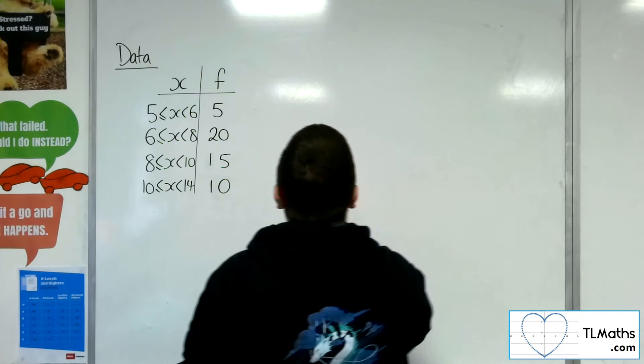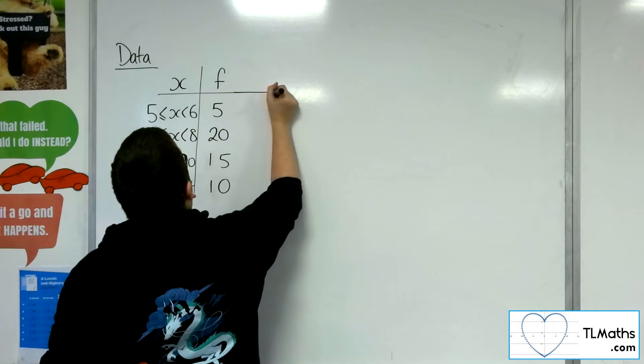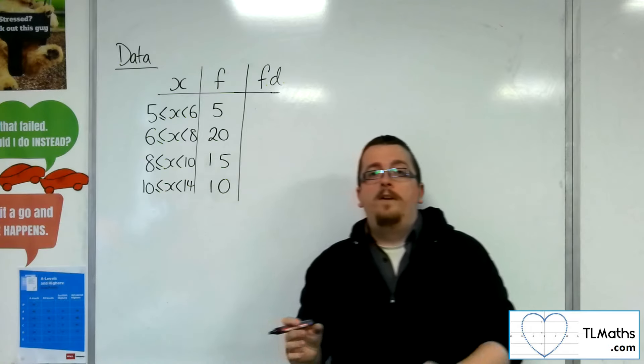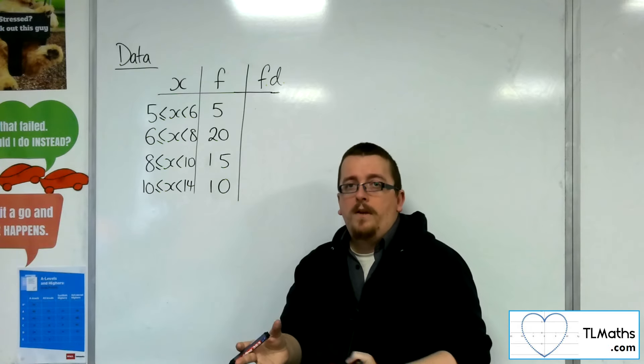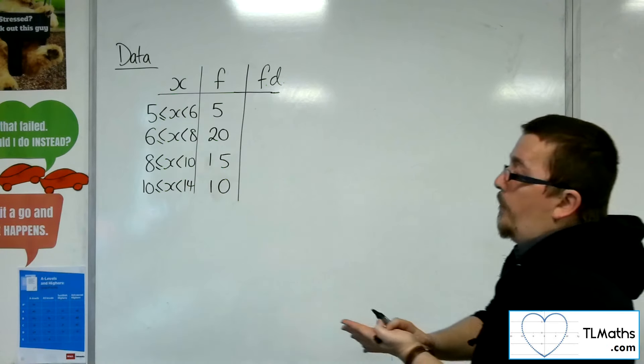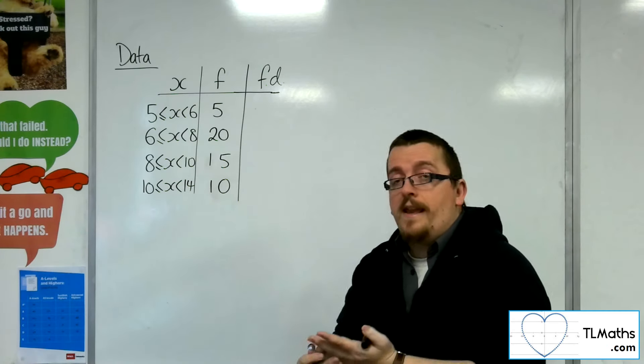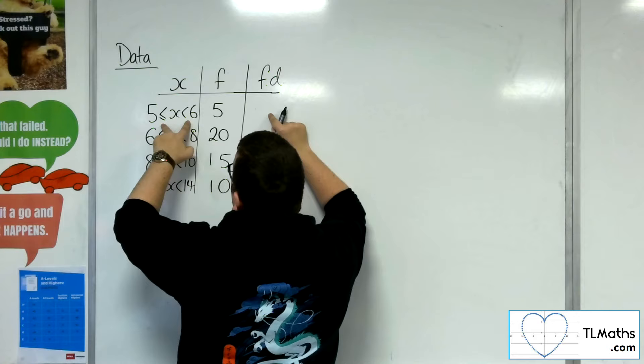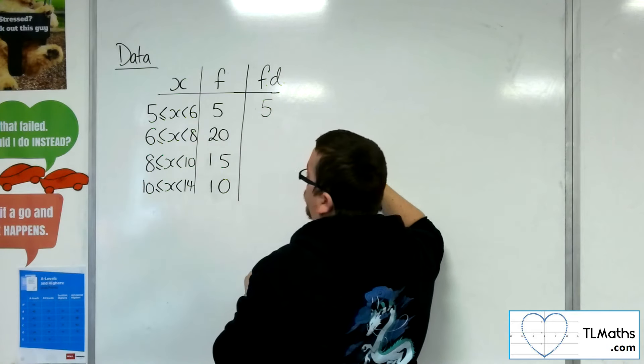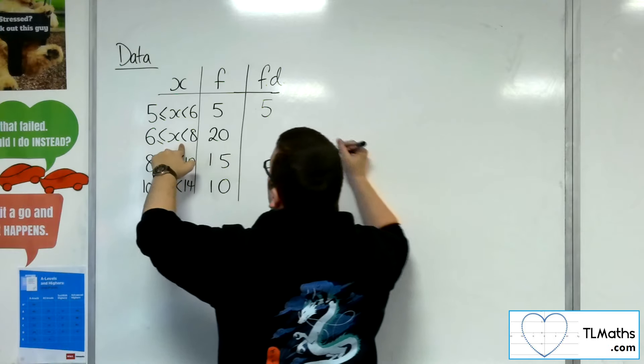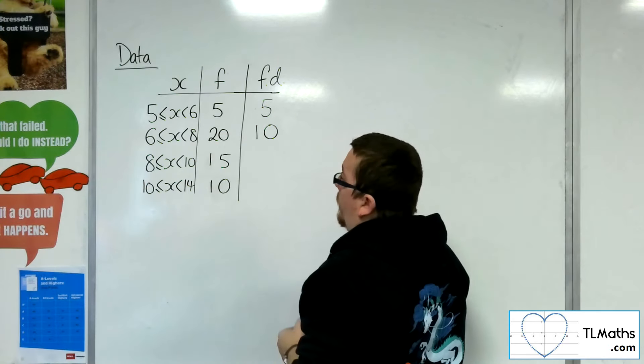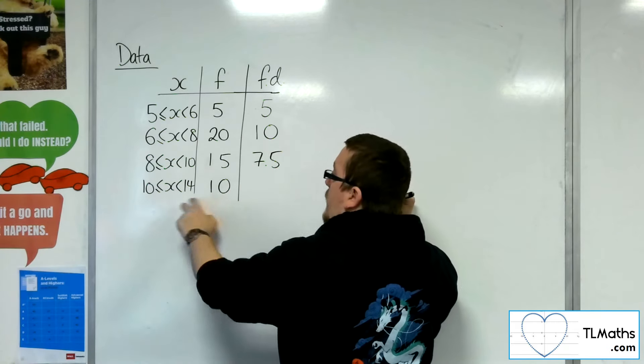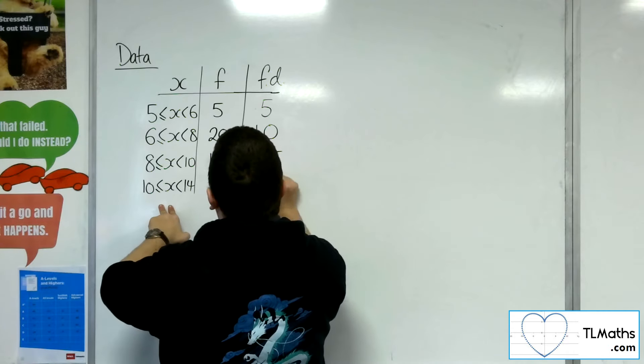So to counteract that, we instead look at something called the frequency density. The frequency density is a calculation so that we avoid that problem when we draw the graph. And you calculate it by getting your frequency and dividing it by the class width. So the frequency density will be 5 divided by 1, so just 5 in that case. This one will be 20 divided by 2, so that would be 10. Here we would have 15 divided by 2, so 7.5. And here we would have 10 divided by 4, so 2.5.